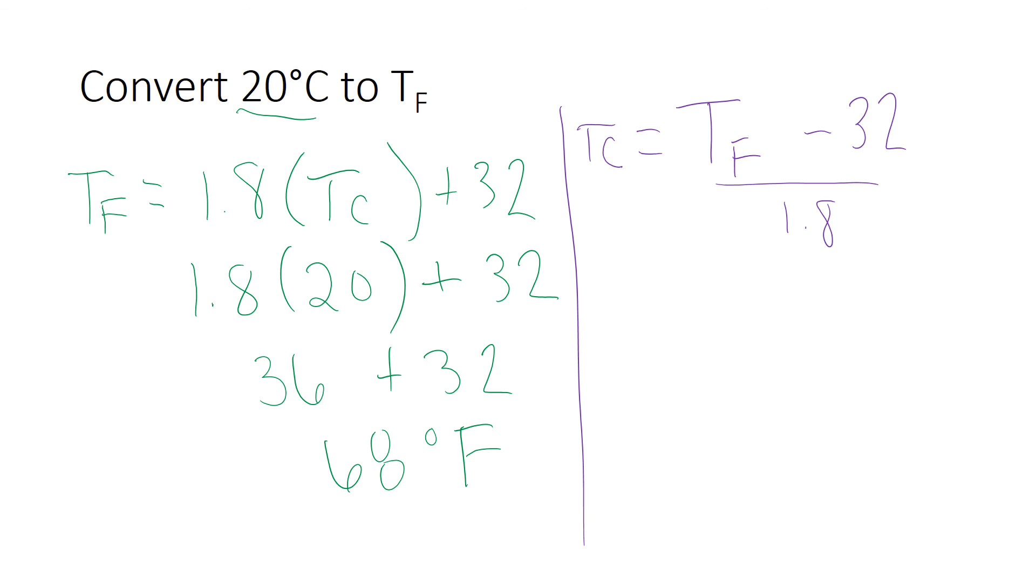But working the problem, I'm starting out with 68 degrees Fahrenheit minus 32 divided by 1.8. And my answer is going to give me 20 degrees Celsius. So you want to make sure that because we started out with a temperature with no decimals, we end with a temperature with no decimals as well.